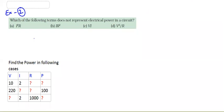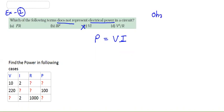Now Exercise 2: Which of the following terms does not represent electrical power? Let's look at the formulas first. The basic power formula is P = V × I. The C option matches this formula, so C is a correct representation of electrical power. Now let's apply Ohm's law — V = IR, or equivalently I = V/R.